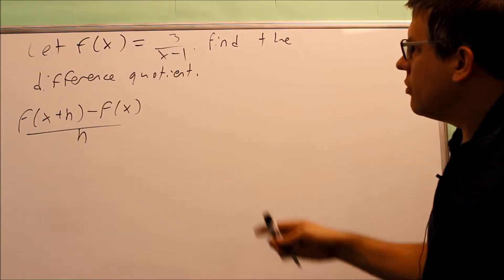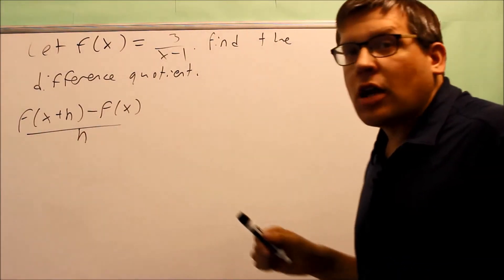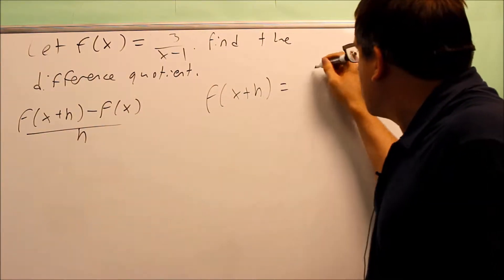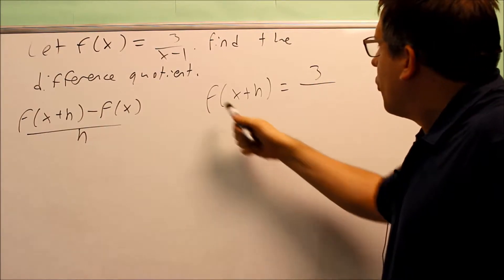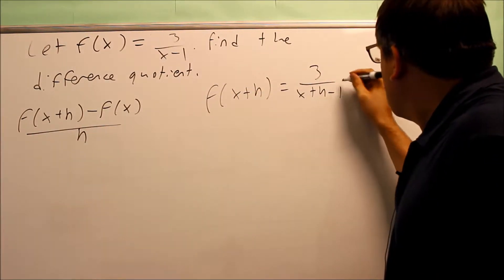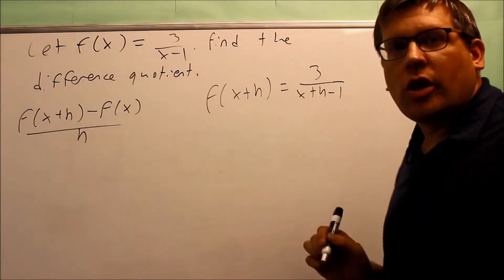For this one, what we want to do is we need to first find f of x plus h. So f of x plus h is equal to 3 over, we're going to replace the x with x plus h. So I have x plus h minus 1.